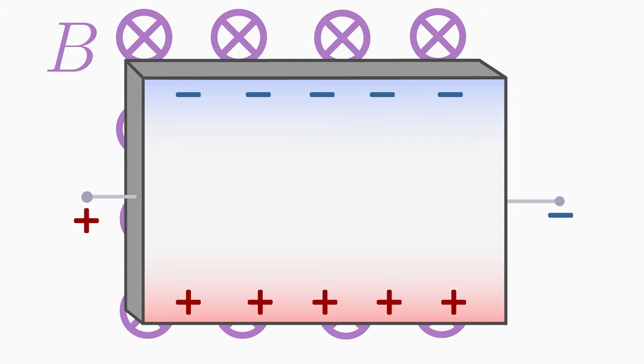This generated charge difference, which no longer changes, corresponds to a constant Hall voltage. We denote it by UH.